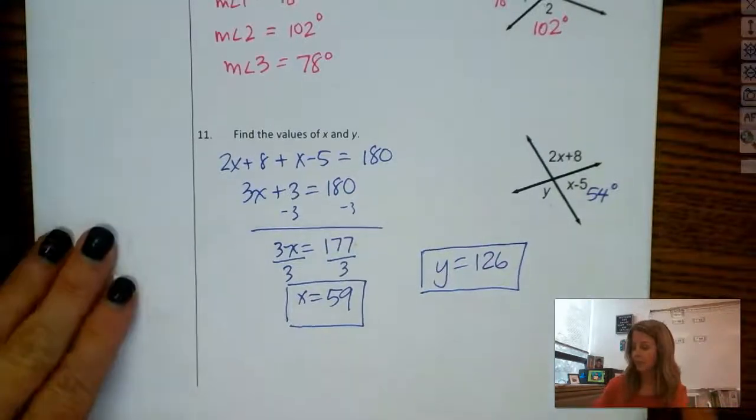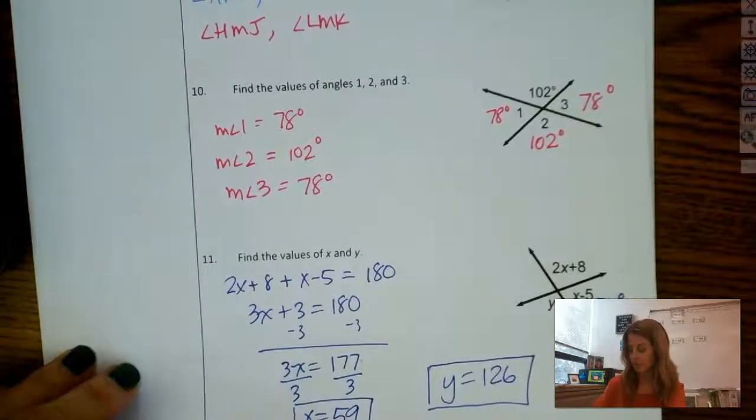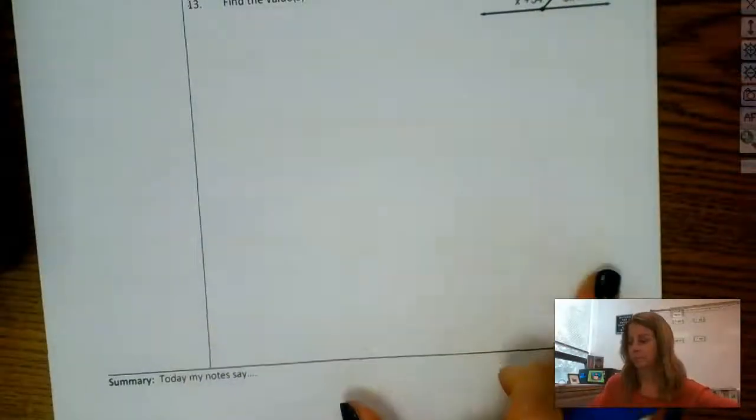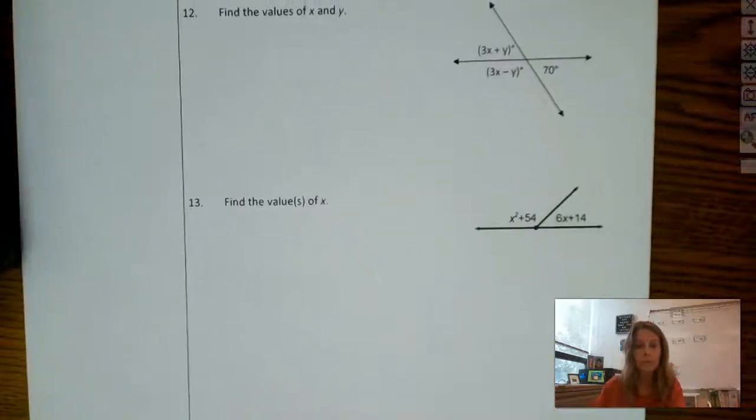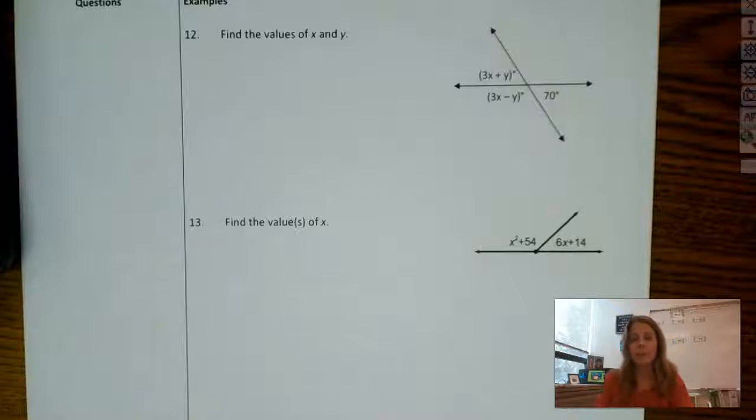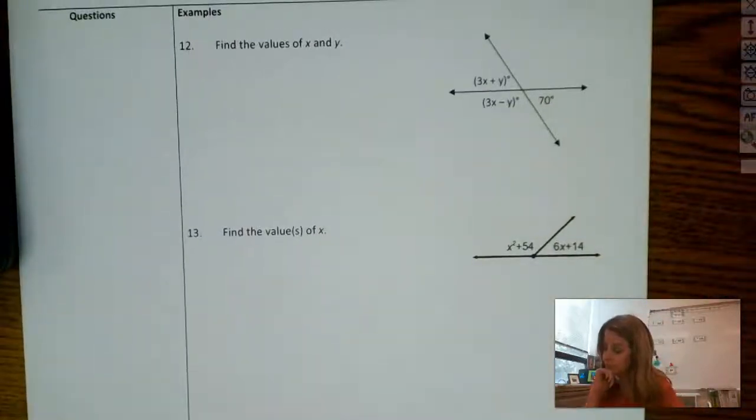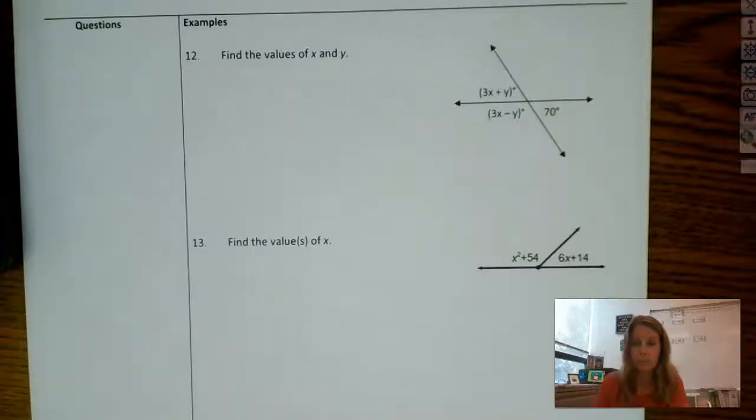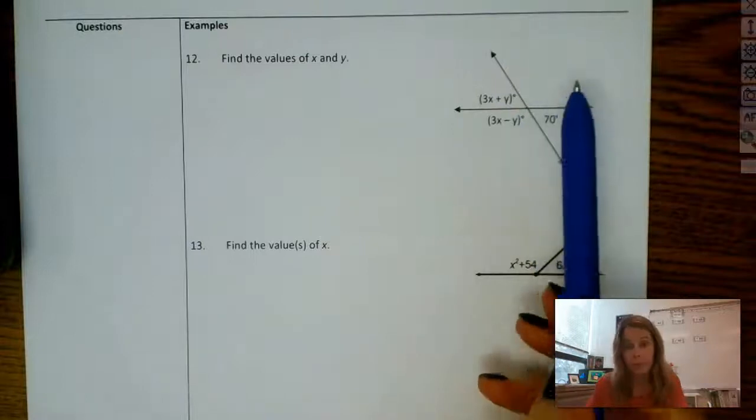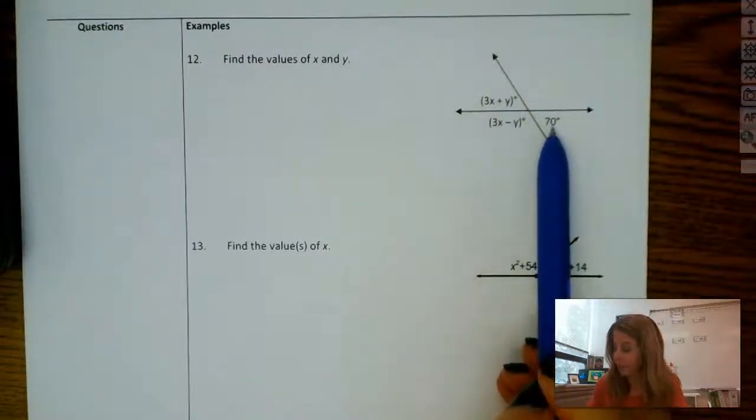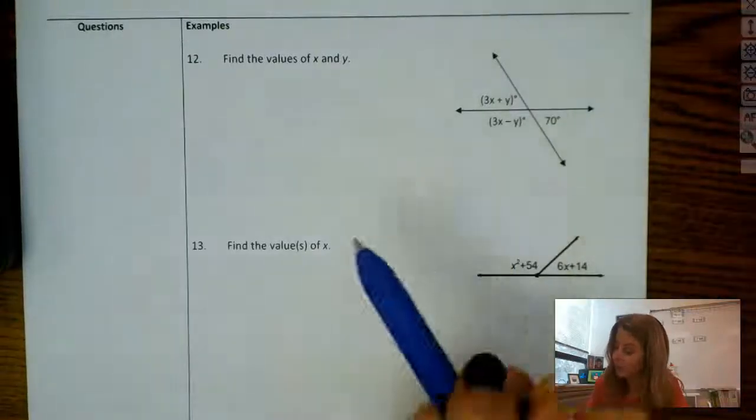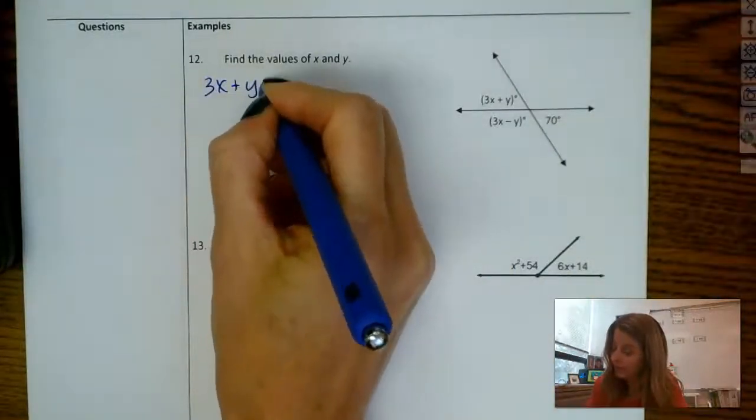All right. Let's move on and look at the next one. Number 12, find the values of x and y. So again, we're working on how to set this up. So I would like you to pause this and try to jot down a few equations. If you can solve it, great. But for right now, let's just write down some options. I'm going to write a few equations down. I do have a linear pair, or not a linear pair. Excuse me. Vertical angles.